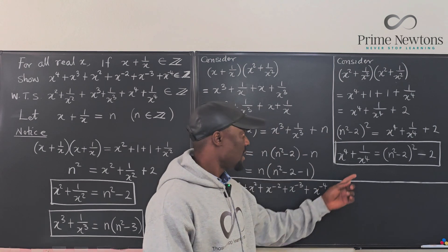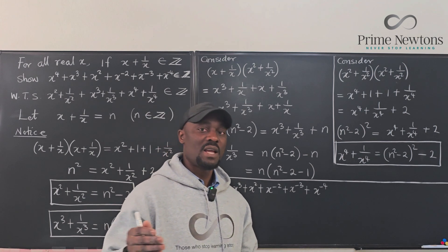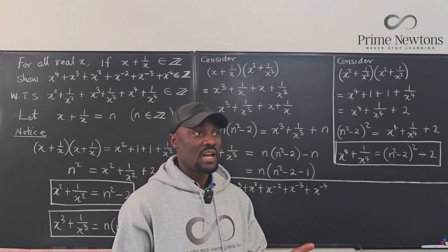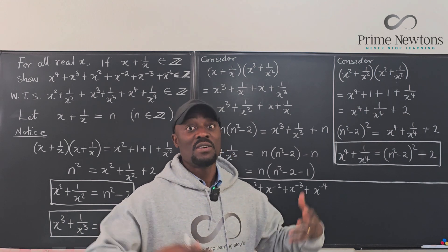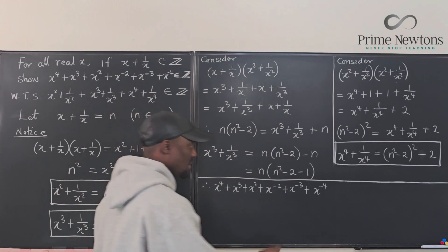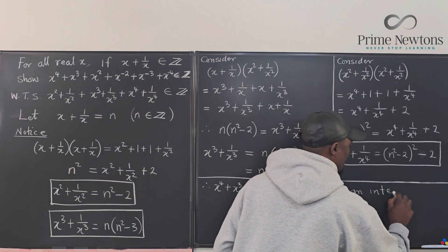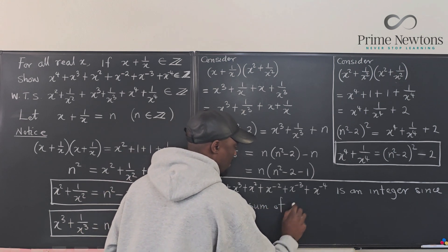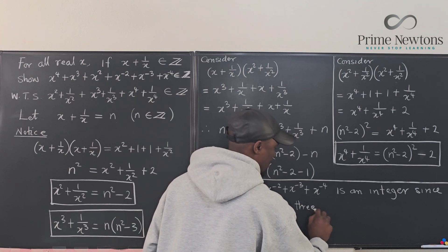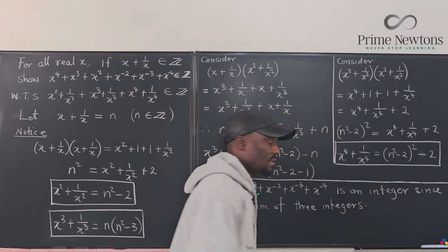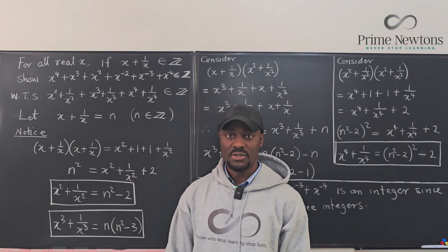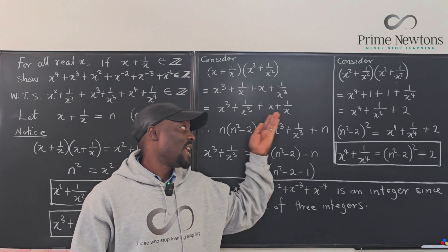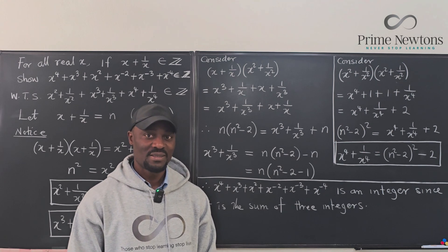It is safe to say this is an integer because it is the sum of three integers. Addition, multiplication, and subtraction within the set of integers form a closed set — you cannot add, subtract, or multiply integers and get a result that is not an integer. That's the beauty of this exercise. There are other ways of doing this, but this approach is straightforward and easy to follow all the way to the end. Never stop learning — those who stop learning stop living.